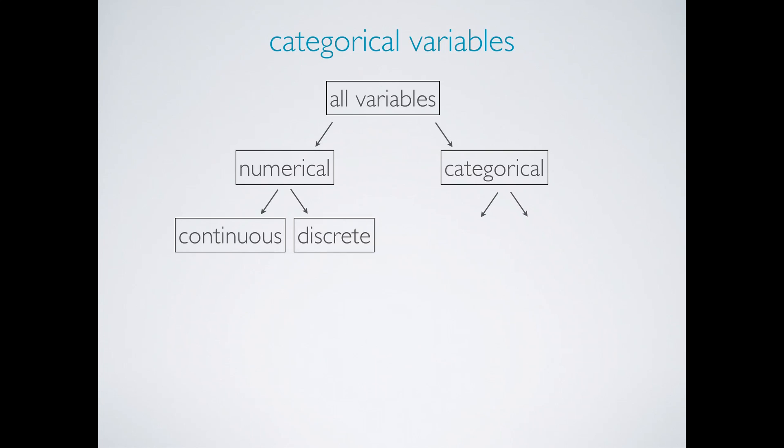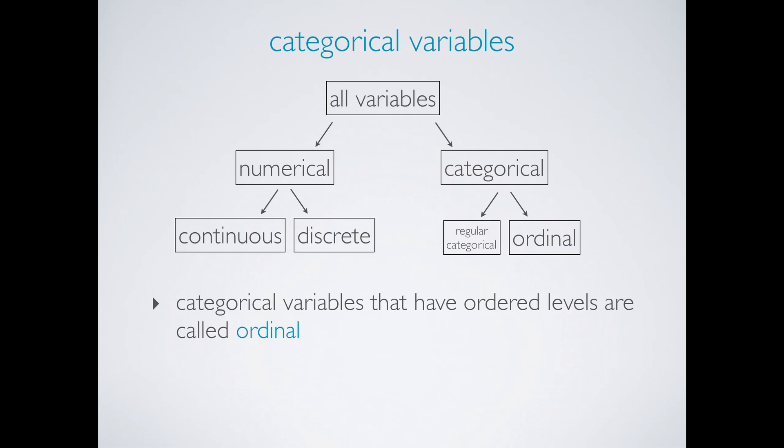Categorical variables that have ordered levels are called ordinal. Think about a survey question where you are asked how satisfied you are with the customer service you received, and the options are very unsatisfied, unsatisfied, neutral, satisfied, and very satisfied. These levels have an inherent ordering.